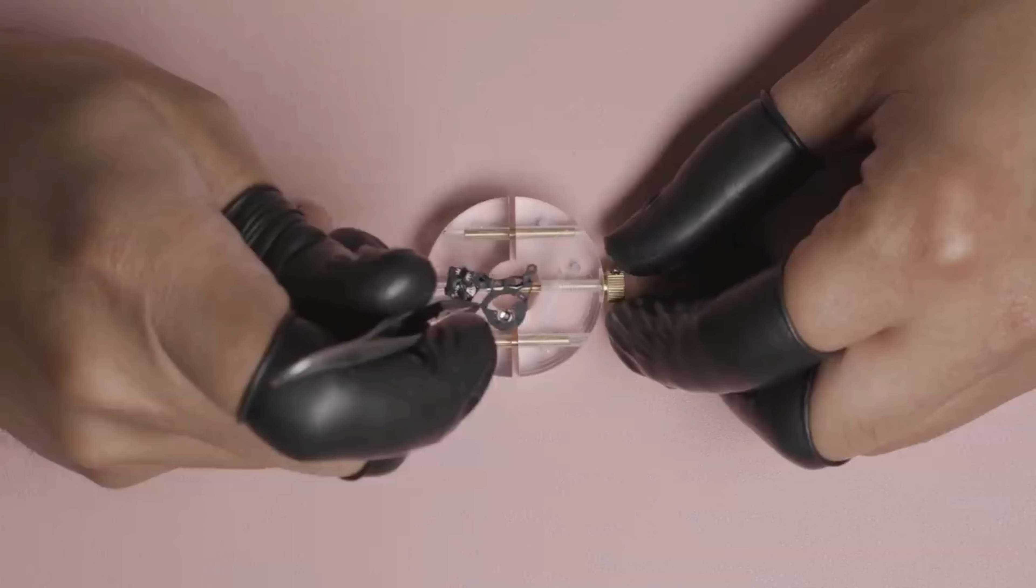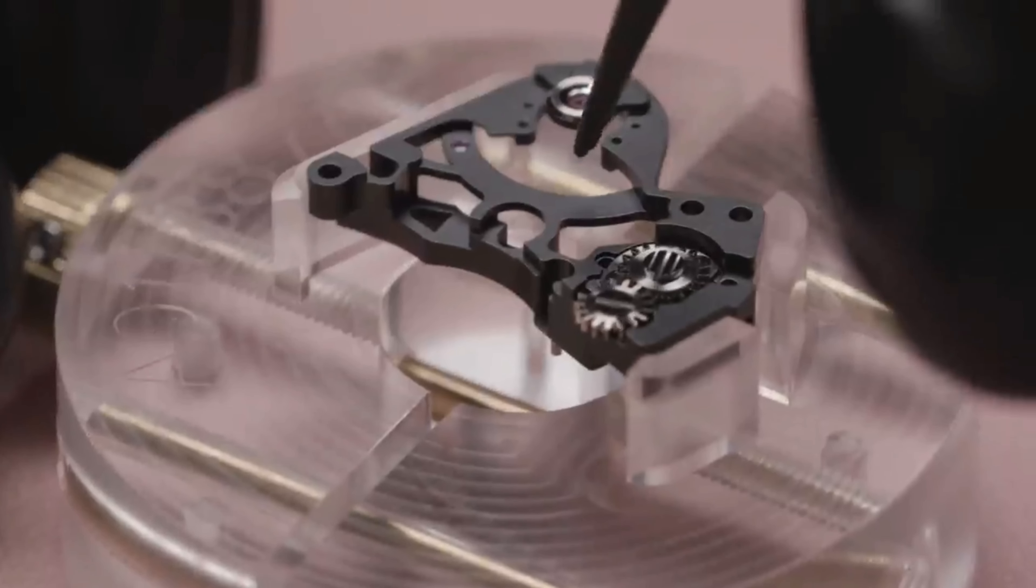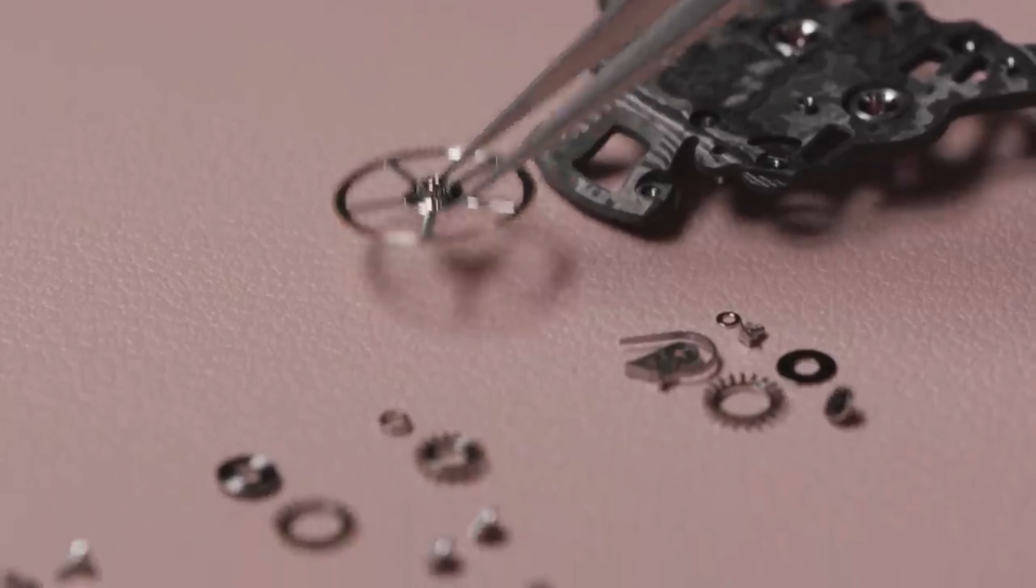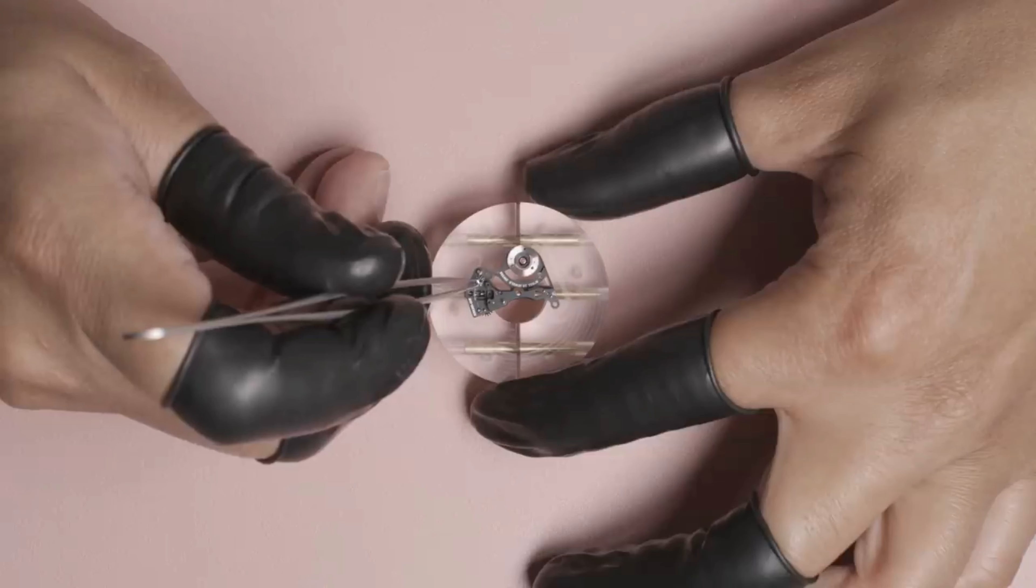On the wrist of a big hitter like Bubba Watson, it was critical for us to ensure that the RM3802 could withstand shocks of 10,000 Gs.